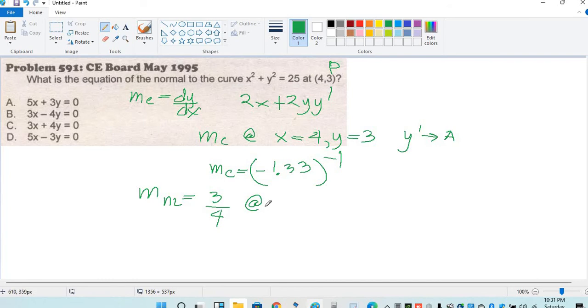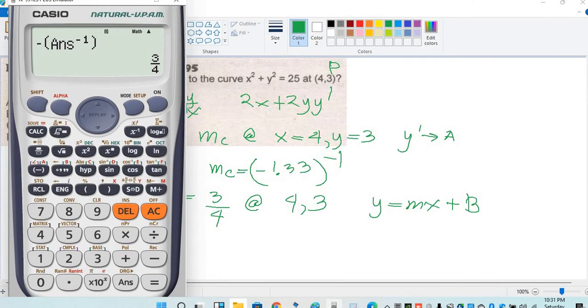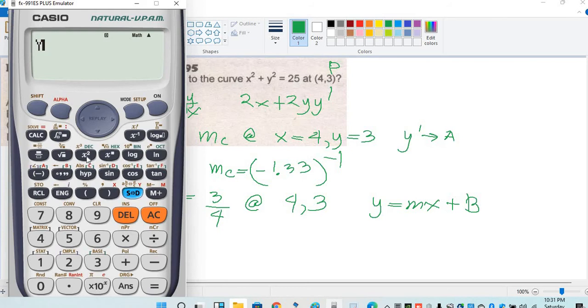Normal line at 4 comma 3. Since dito sa equation, ito ay linear equation. Ang equation ng linear equation ay y is equal to mx plus b. Therefore, input natin yung equation na yan. Y is equal to m, anong m? 0.75, mx plus b. Pukunin natin yung y-intercept na b.